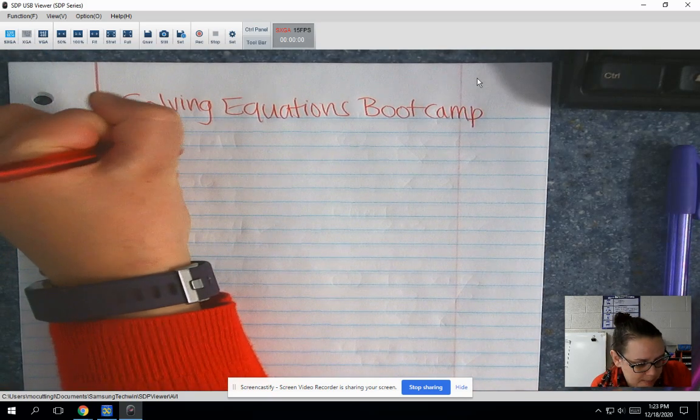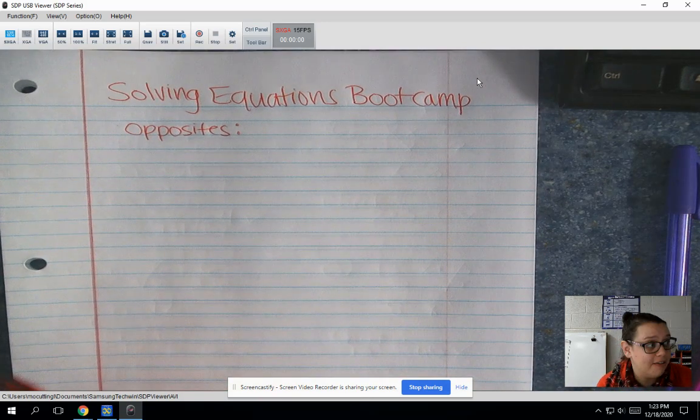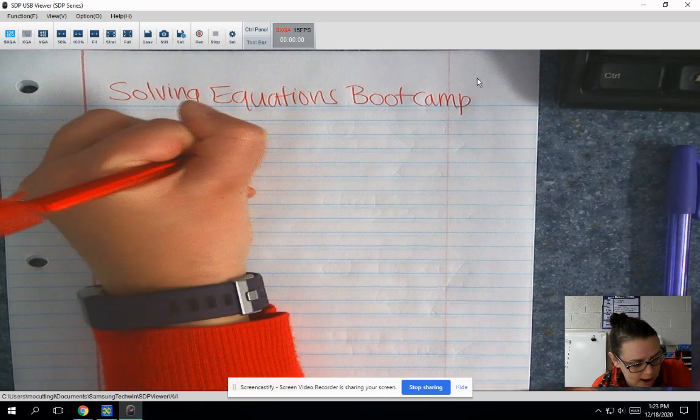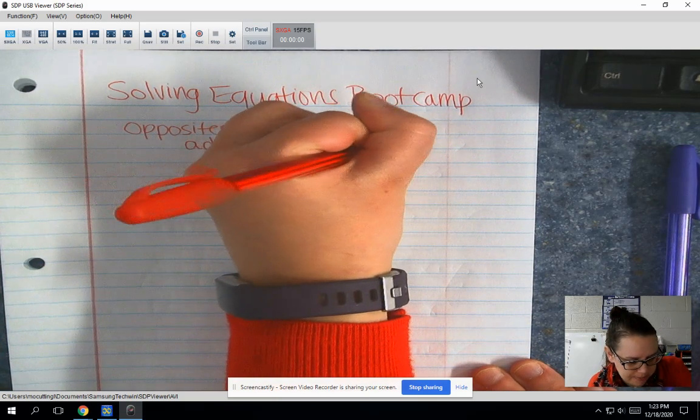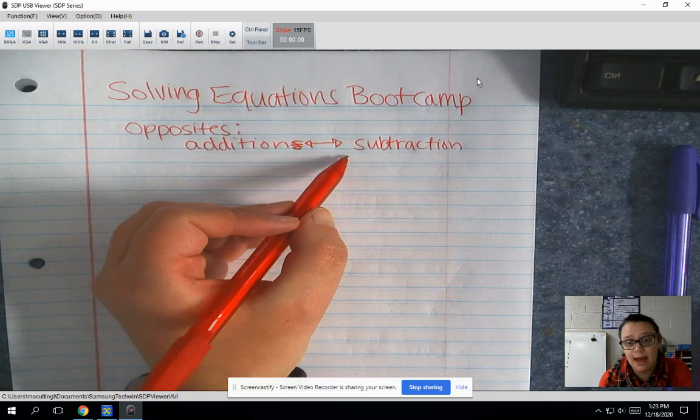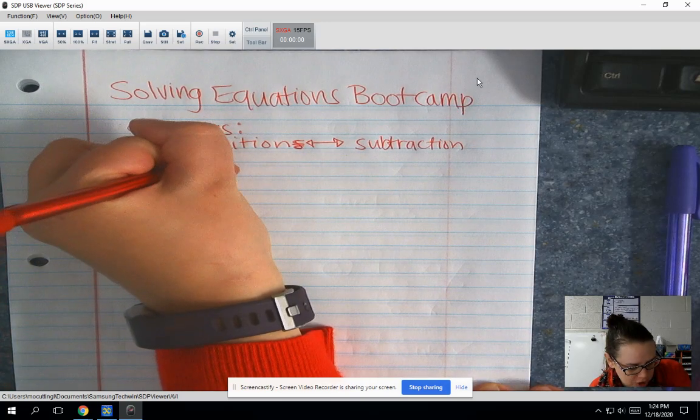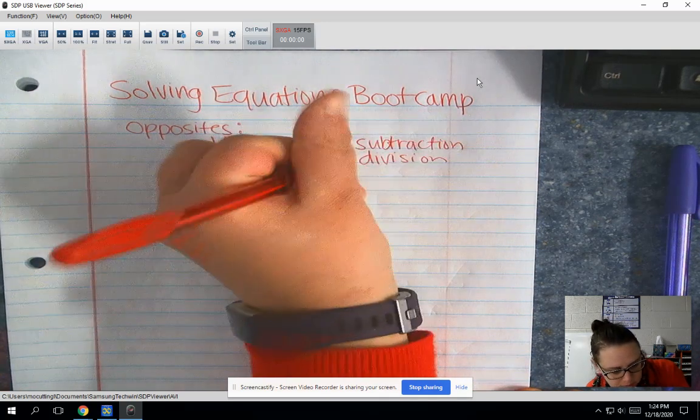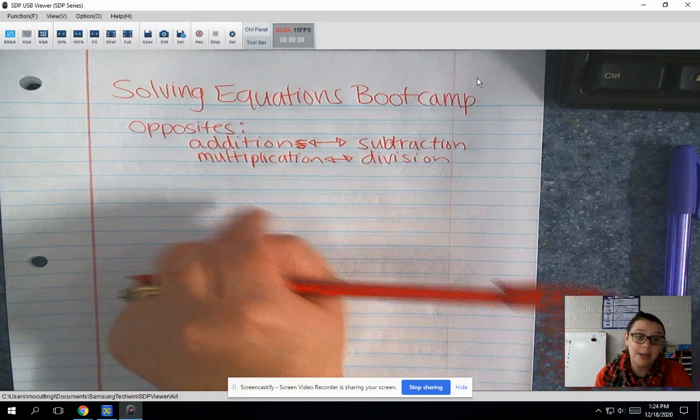So at the top, we're going to write our opposites. Because in order to solve an equation, we're going to do the opposite of whatever they did to our variable, and we're going to do it on both sides of the equation. So addition and subtraction are opposites. If in the original equation they're adding, we want to subtract. If they're subtracting in the original equation, we're going to add. And then multiplication and division are our other opposites. So if in our original equation they're multiplying, we want to divide. If in our original equation they're dividing, we want to multiply.